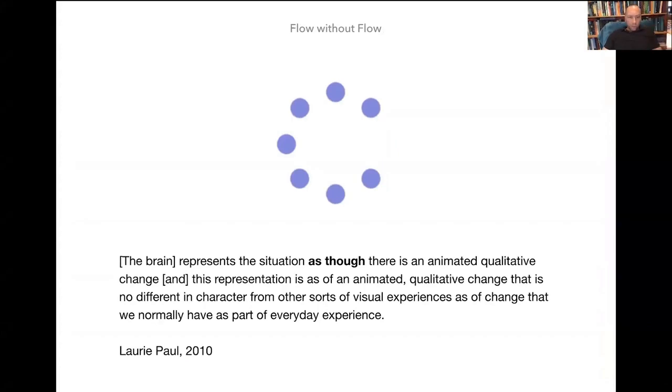So philosopher Laurie Paul takes this phenomenon as evidence that passage is a construction of the brain. So she thinks that our brains create an illusion of passage for us. And this can be a response to a claim of John Norton's, who thinks that the only reason we think that there is no time in the world is because our physics theories tell us there isn't. But here's another reason. It looks like our brain, we can find evidence that our brain is capable of performing constructions like this.